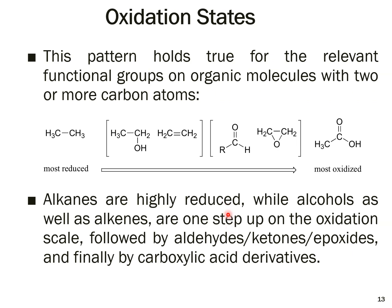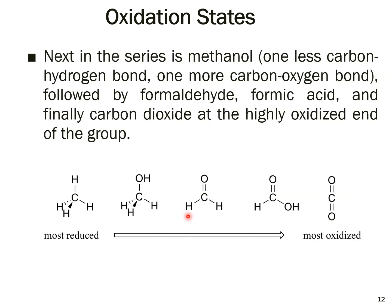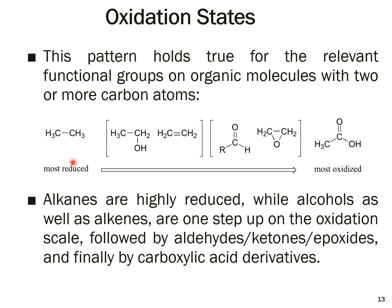This pattern also holds for functional groups on molecules with two or more carbon atoms. An alkane is in the most reduced form. Alcohols and alkenes are more oxidized than ethane. Aldehydes, ketones, and epoxides are more oxidized still. The most oxidized compound in this series is carboxylic acid — for example, acetic acid.